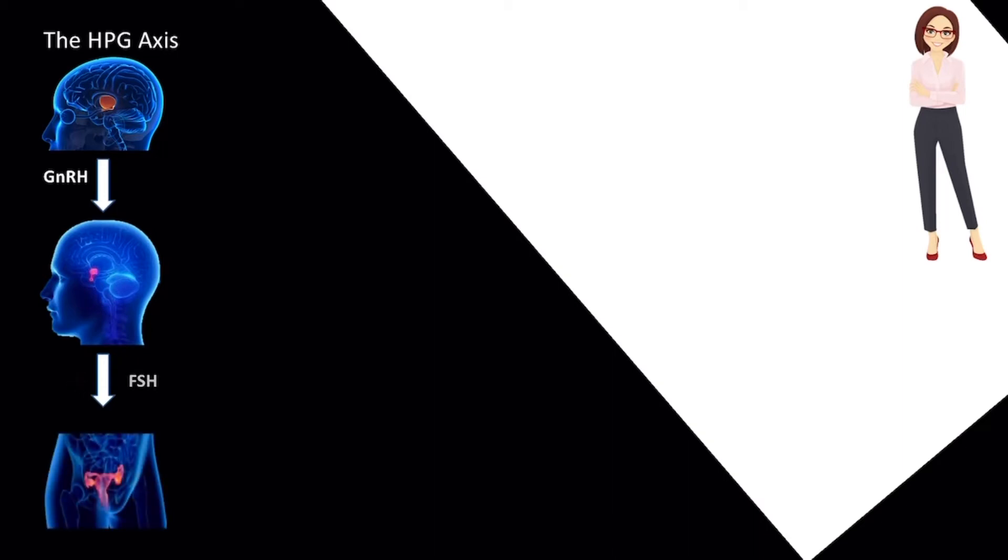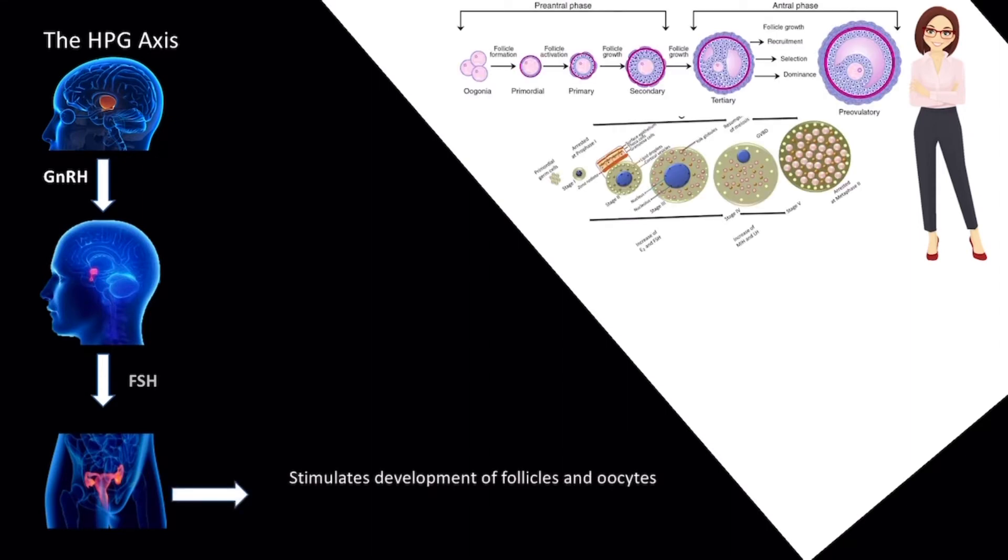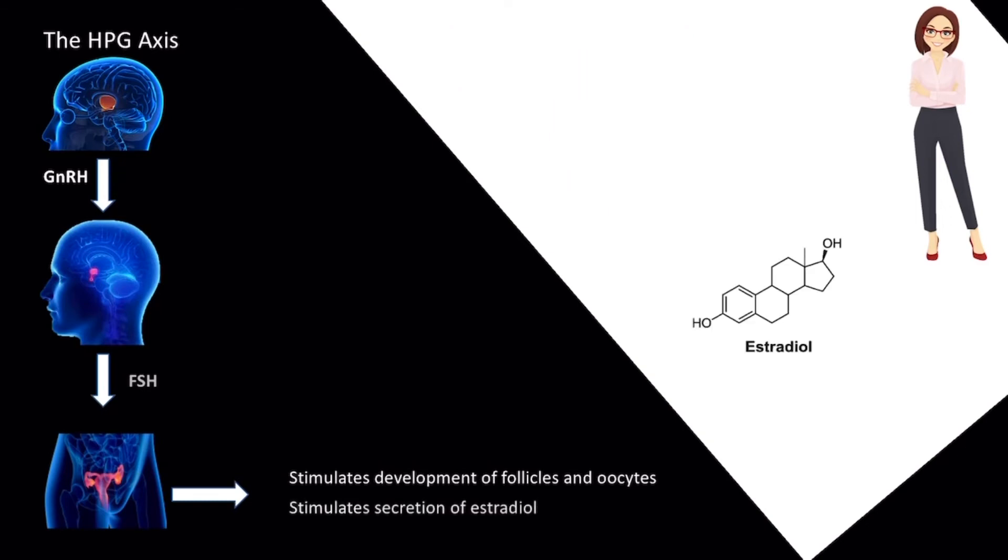In females, FSH stimulates the development of follicles and oocytes in the ovaries, while also stimulating the secretion of estradiol.